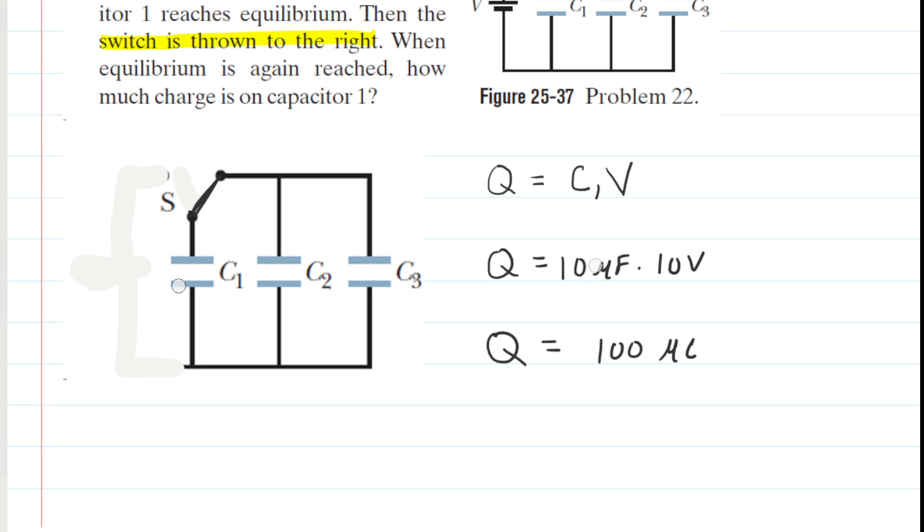Now, capacitor 1 started out at 100 microcoulombs, but what's going to happen is that the 100 microcoulombs is going to redistribute itself across the three capacitors. So we expect that the amount of charge on the plates of C1 is going to be reduced. But how do we do this?